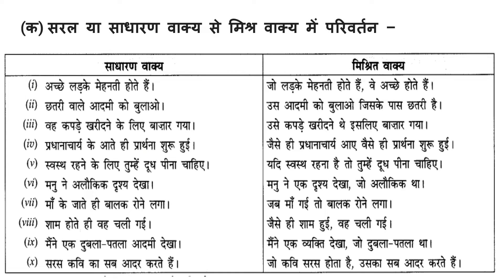Let's do some practice — converting sadharan vaakya or saral vaakya to mishrit vaakya. Mishrit vaakya needs connecting words like jo, jab, tab. Jo ladke mehnati hoti hain, ve achhe hoti hain — those who are hardworking are good. Chhatri wale aadmi ko bulao — call the person with the umbrella. How to change it to mishrit? Us aadmi ko bulao, jiske paas chhatri hai — call that person who has an umbrella.